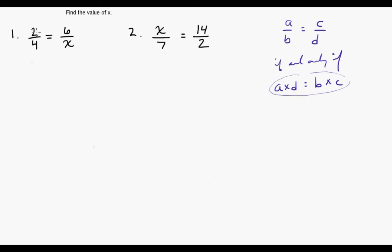Our first example we have two over four equals six over X. We're going to take the cross product, so we're going to get two times X equals four times six. Now all we have to do is simplify this. Two times X is two X, four times six is twenty-four. We're going to isolate the X, so we're going to divide both sides of the equation by two. This two is going to cancel with that two, leaving X by itself. Twenty-four divided by two is twelve.